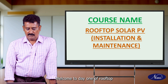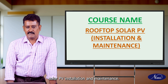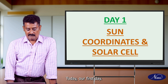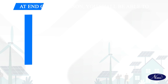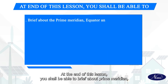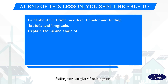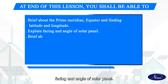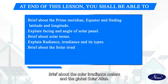Good morning students, welcome to day one of rooftop solar PV installation and maintenance. Today, the first class is sun coordinates and solar cells. At the end of this lesson, you shall be able to brief about prime meridian, equator and finding latitude and longitude, facing and angle of solar panel, brief about solar terms, explain about radiance, irradiance and its types, brief about the solar irradiance meters and global solar atlas.